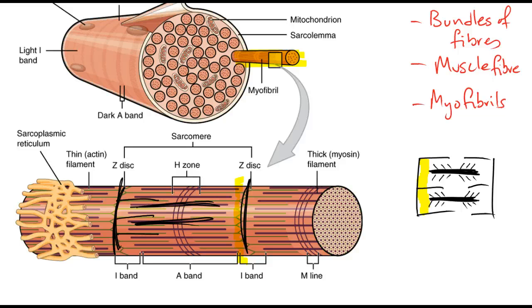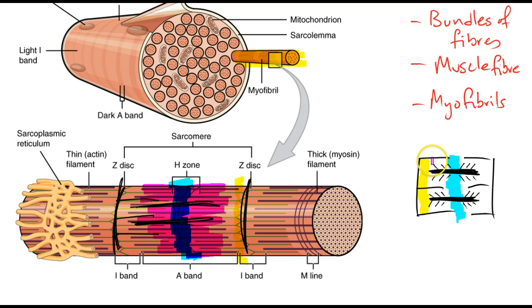We have our H-zone which runs in between our actin. So again when the sarcomere shortens the H-zone will narrow. And we have our A-band. Our A-band runs the length of the myosin. So when a sarcomere shortens the A-band doesn't change its length.